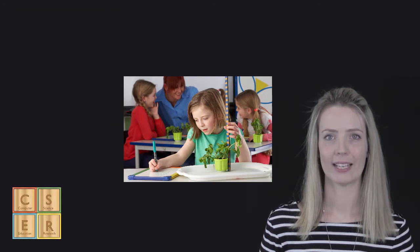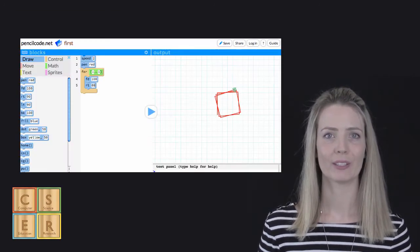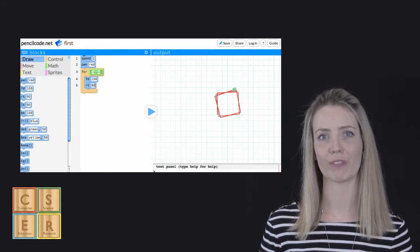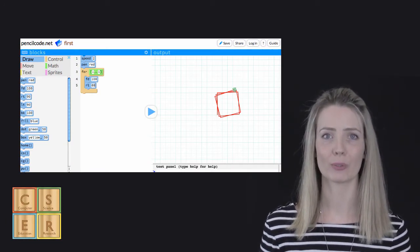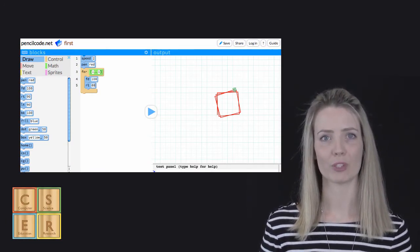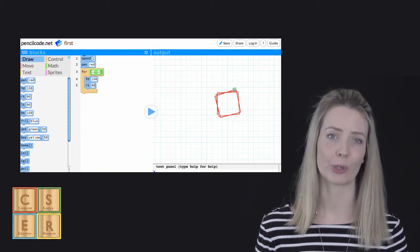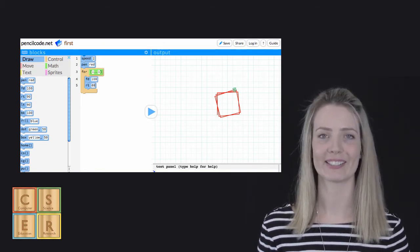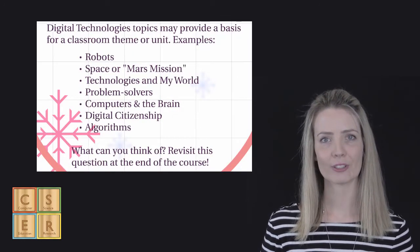In fact, digital technologies can also be a way to support the teaching of other learning areas such as mathematics or literacy. An example of this is by having students explore geometry with visual programming by drawing features of shapes using pencil code, or by using visual programming as a new medium for creating narratives through the creation of animations.